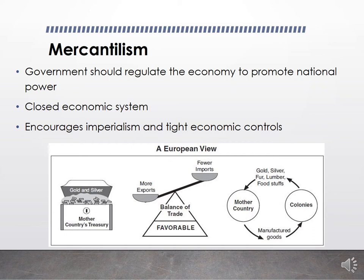England has its North American colonies and its Caribbean colonies, trying to gain as much power and money as possible. The goal is a favorable balance of trade — more exports and fewer imports — hoarding as many resources as possible. The mother country typically produces manufactured goods because it is more developed than the colonies.